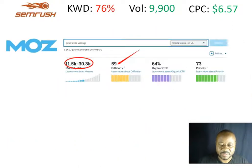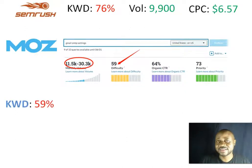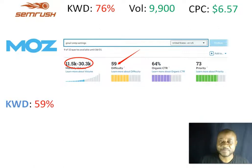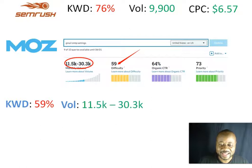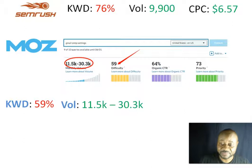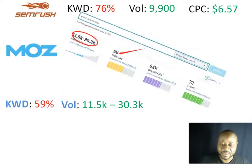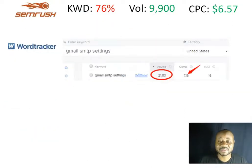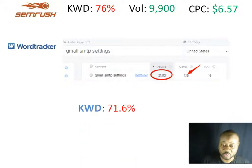Next is Moz, a common SEO platform. According to Moz, the keyword difficulty is very hard at 59%, and the volume is a range between 11.5K and 30.3K.